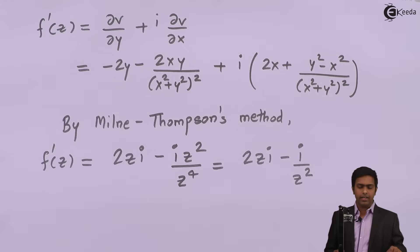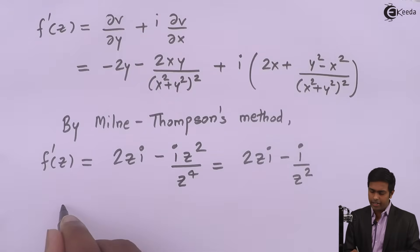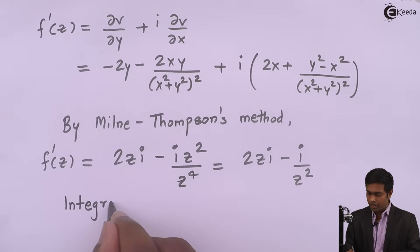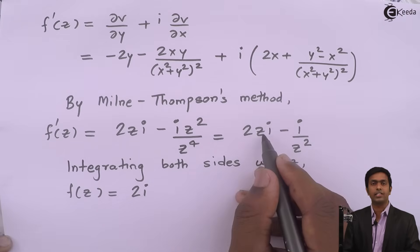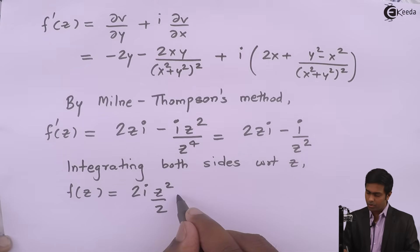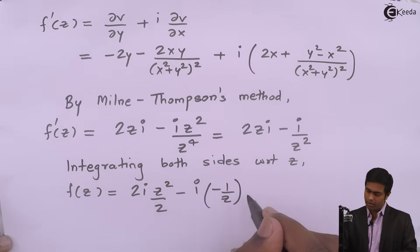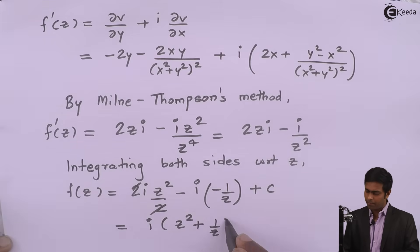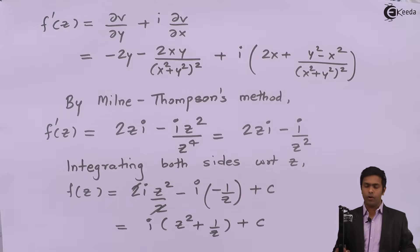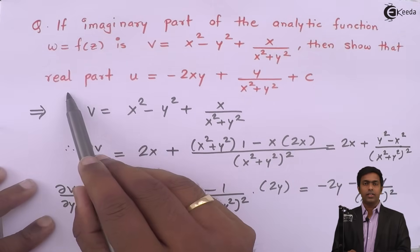Now that we have f'(z) in terms of z, to get f(z) we integrate both sides with respect to z. So f(z) = 2i·(z²/2) − i·(−1/z) + c, which simplifies to i·(z² + 1/z) + c. We got the value of f(z), but since the question asks us to show the real part, we need to resubstitute z = x + iy.